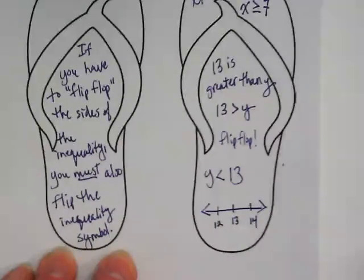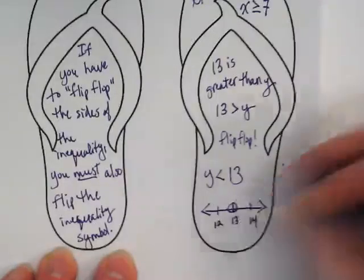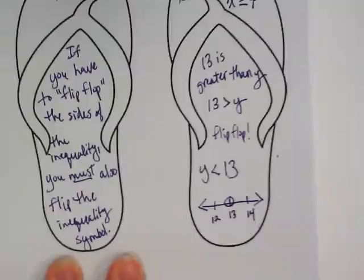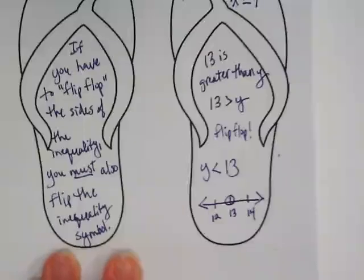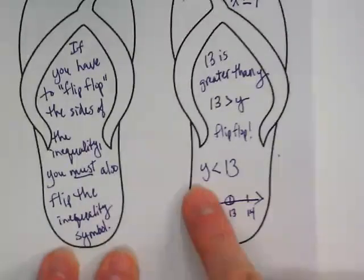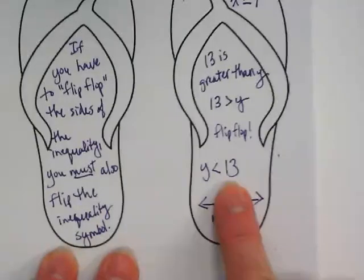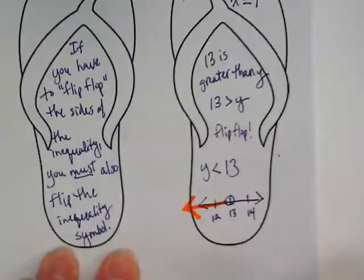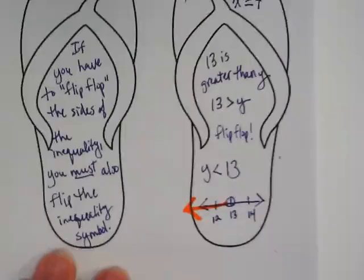And this is why order matters. The symbol tells you what direction to go. If the variable's on the left, the symbol is the direction your arrow needs to go, and it goes to the left. And that is why order matters with inequalities.